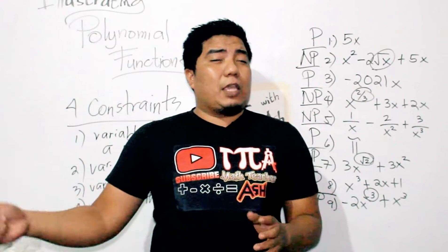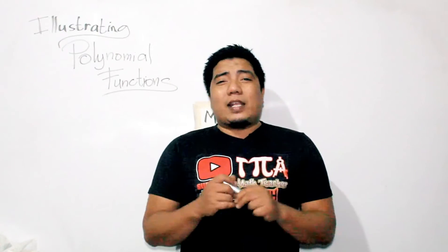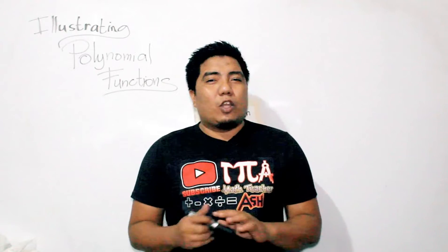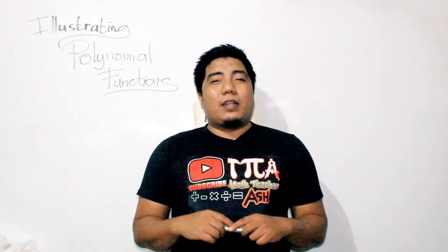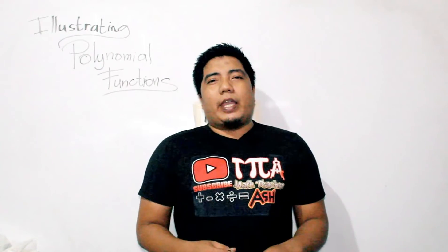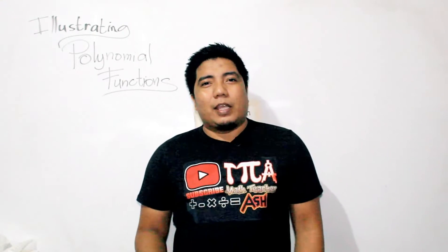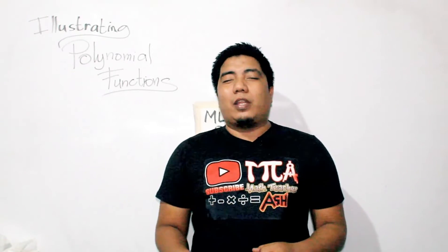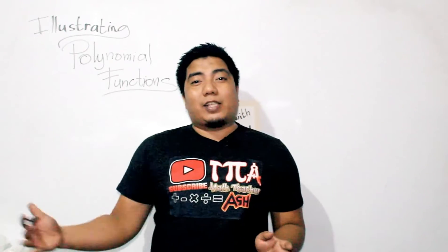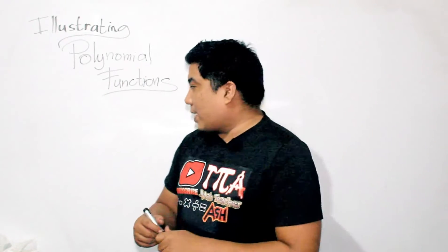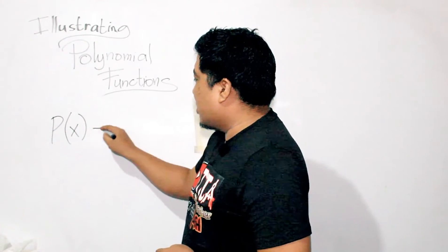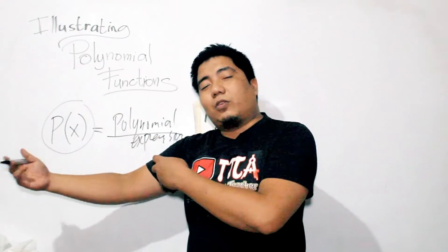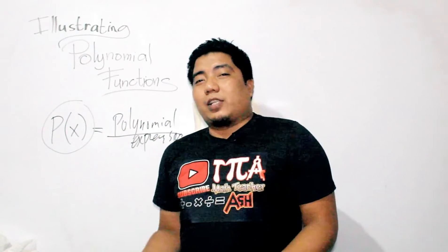Now let us go to our definition of what is a polynomial function. The next question is: what is a polynomial function? A polynomial function can be described in many ways because it has a lot of types based on its degree and the number of terms. The polynomial function is basically a polynomial, but it uses two variables — if earlier we discussed one variable x, to become a polynomial function, a polynomial needs a counterpart which is the function of x, also known as the y variable. So basically, a polynomial function is denoted as P(x) equals the polynomial expression.